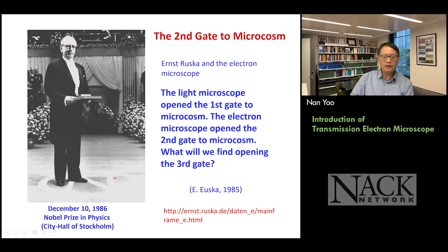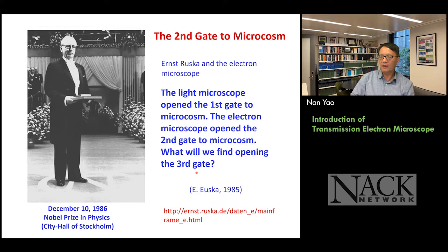Here is a slide I really enjoy, because it shows Ernst Ruska receiving a Nobel Prize — and more importantly, a statement he made. He said: the light microscope opened the first gate to the microcosm. The electron microscope opened the second, because you have much better resolution and shorter wavelengths. And he already asked the question for the next one or two generations of scientists: what will we find opening the third gate? So far, there's no clue. Can we see something smaller than inside the atom? Can we see anything inside the electron? Nobody knows, but that's a really good question.